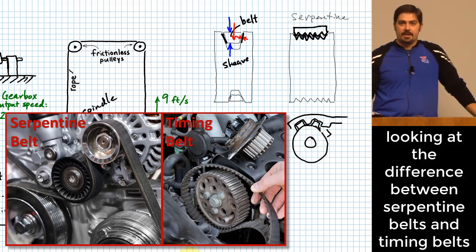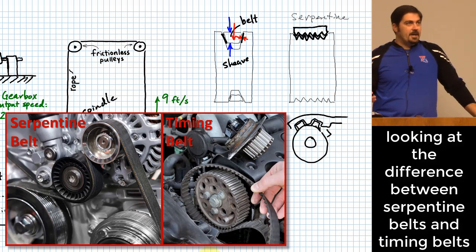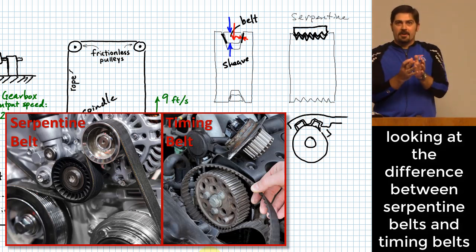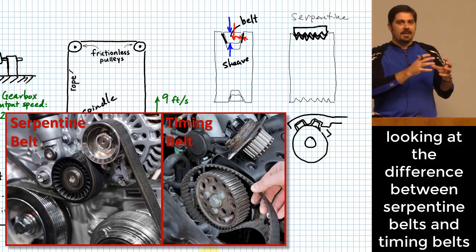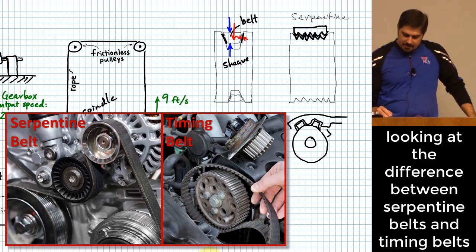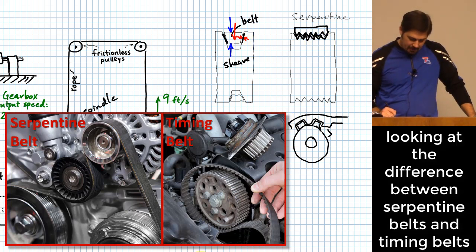Sometimes you actually want an interface to be able to slip — that's one of its features. In mechanical design, we often need something that will be the first piece to give if there's a problem, similar to a fuse in electricity. You want a part that, if something goes wrong during torque transmission, it's the first piece that breaks so not everything gets ruined. That's one reason why belts are sometimes helpful.